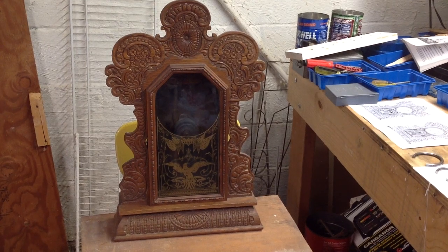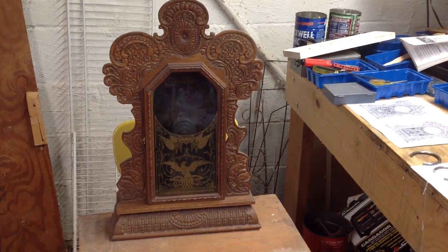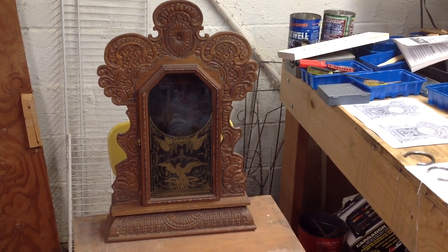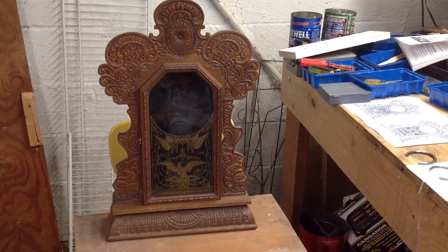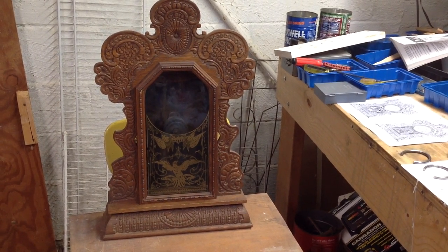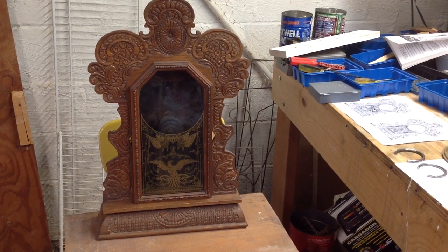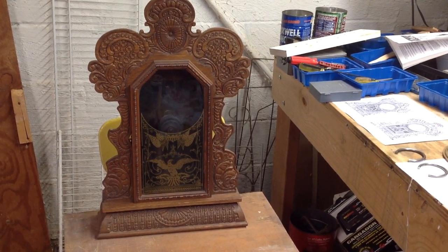The case is made out of oak and those designs in the gingerbread are not made by carving, they're made on a steam press. So that kind of decoration could be mass produced and these kind of clocks became quite common starting around the 1890s.